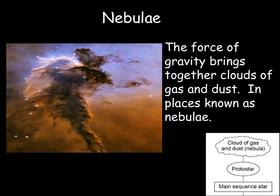All stars start off as a nebula. What happens in a nebula is that the force of gravity brings together clouds of gas and dust. We can see here an image of a nebula — gravity is an attractive force which brings the dust and gas together. As you get more dust and gas you get larger forces of gravity, and that continues to pull more things together until eventually you get a protostar.